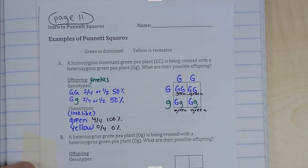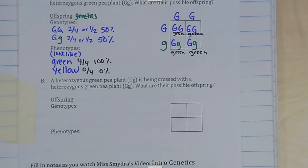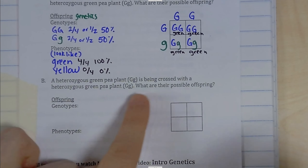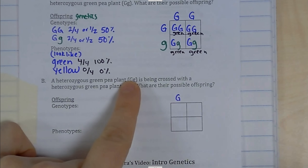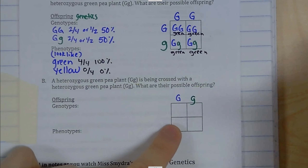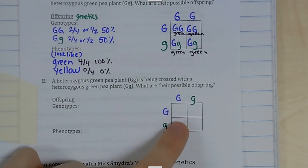Let's look at the next one. Again, green is dominant, yellow is recessive. A heterozygous big G little g is being crossed with a heterozygous big G little g. What are their possible offspring? We're going to set up the Punnett square like we did before — first parent across the top of the square, and our second parent across the side of the square.